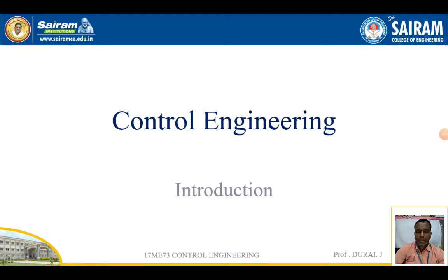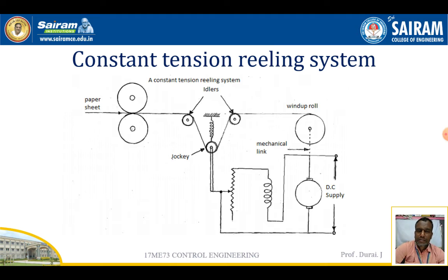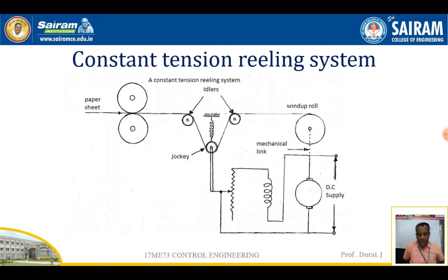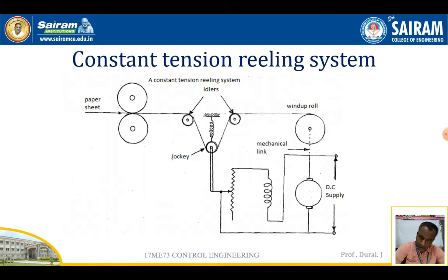Good morning everyone. In this video we are going to discuss about the classification of control systems and also examples for the control systems. Control systems came into the mid of the 18th century. It was invented by James Watt in the year of 1770s and applied to control the speed of the steam engine. After the year of 1955, control engineering has been employed over various processes.